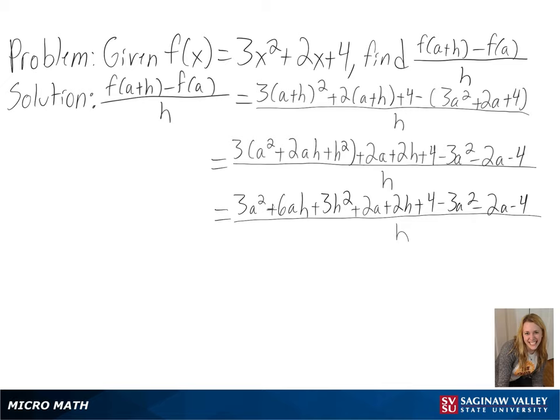Next, we can subtract our values from our numerator. And finally, we can take out an h from our terms to cancel out our h's. And we are left with 6a plus 3h plus 2 as our final answer.